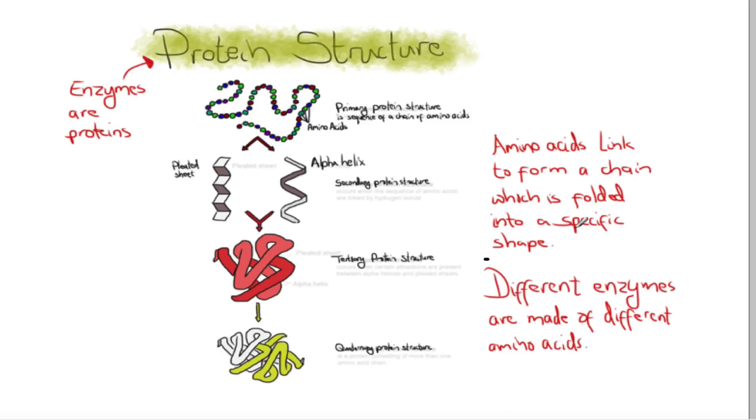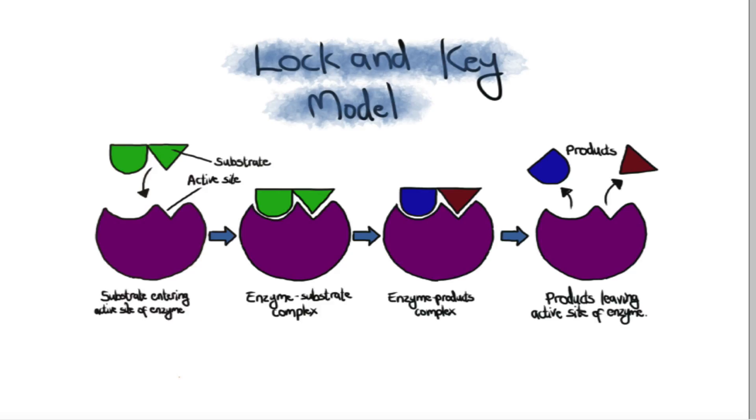Now that specific shape bit is super important because if this is my enzyme, that bit at the top, there's very often an indentation there and that's known as the active site. And the thing that's actually going to be speeded up by this enzyme will fit perfectly into the active site.